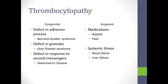Platelet function defects can be congenital or acquired. You can have defects in adhesion, defects in the granules and what granules you have available to secrete, and whether or not the granules are secreted appropriately. An example of an adhesion defect is Bernard-Soulier syndrome, in which platelets don't adhere to von Willebrand factor normally. A defect in granules is gray platelet syndrome, in which one whole type of granule is simply not present and the platelets have a gray color to them.